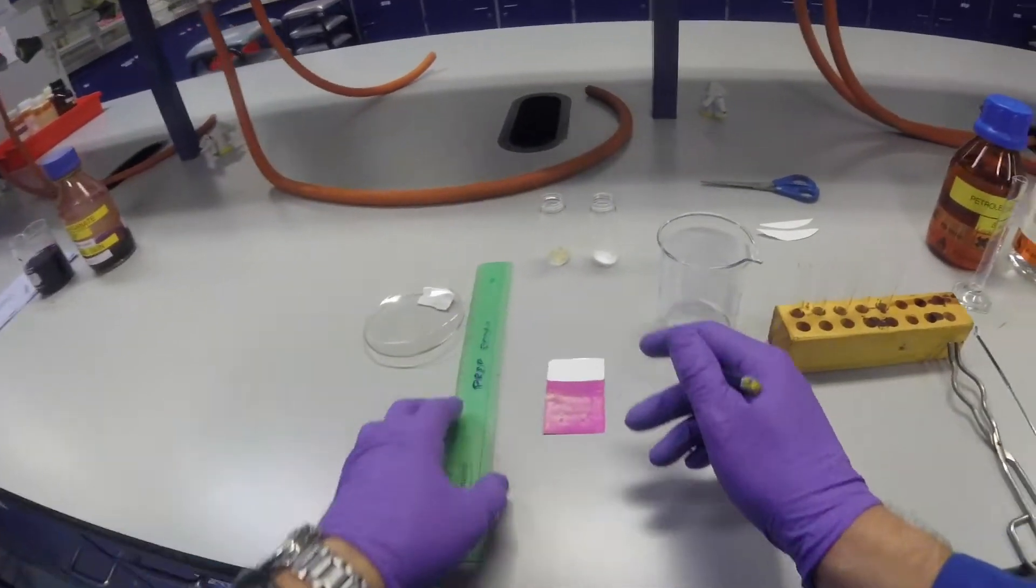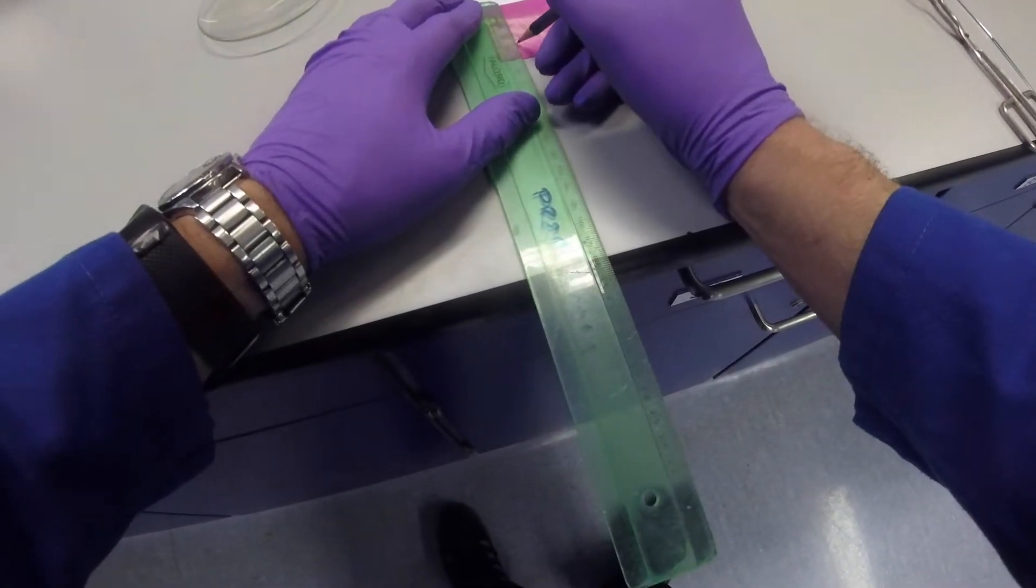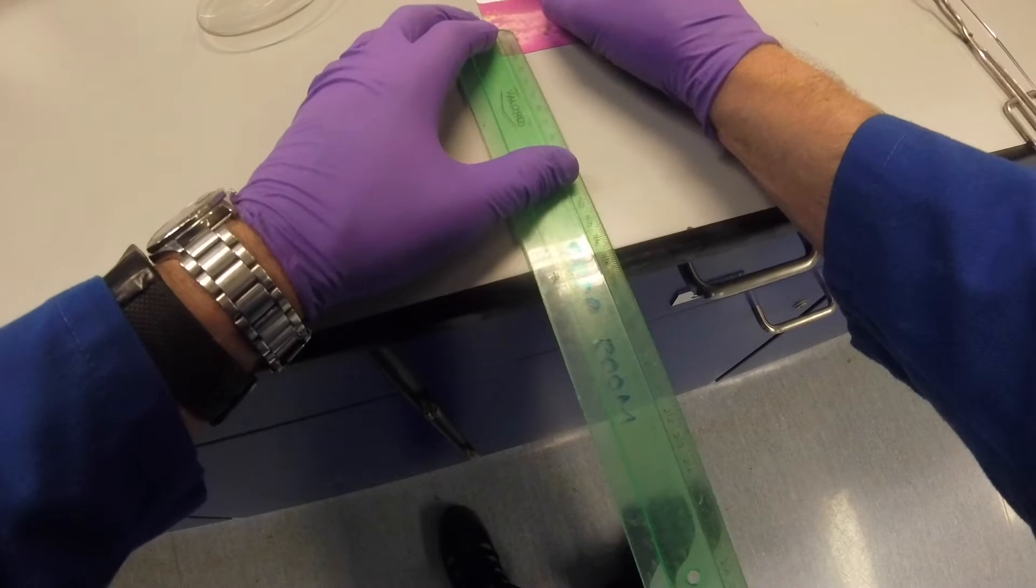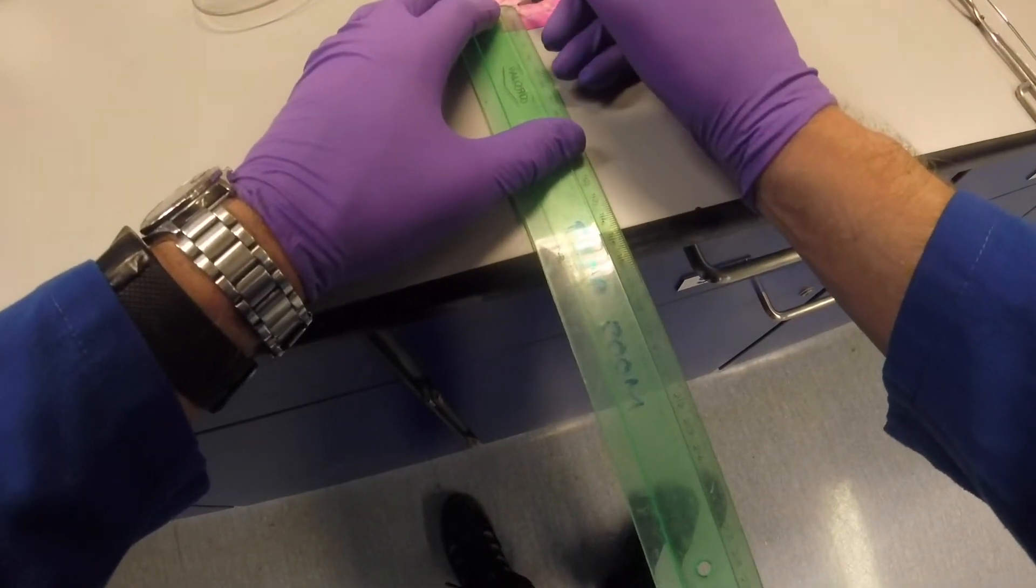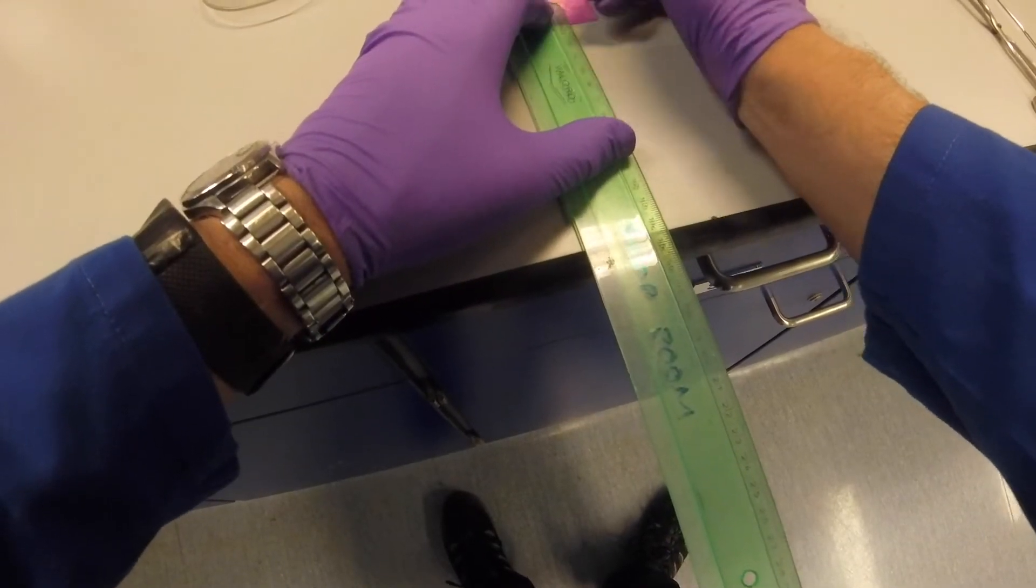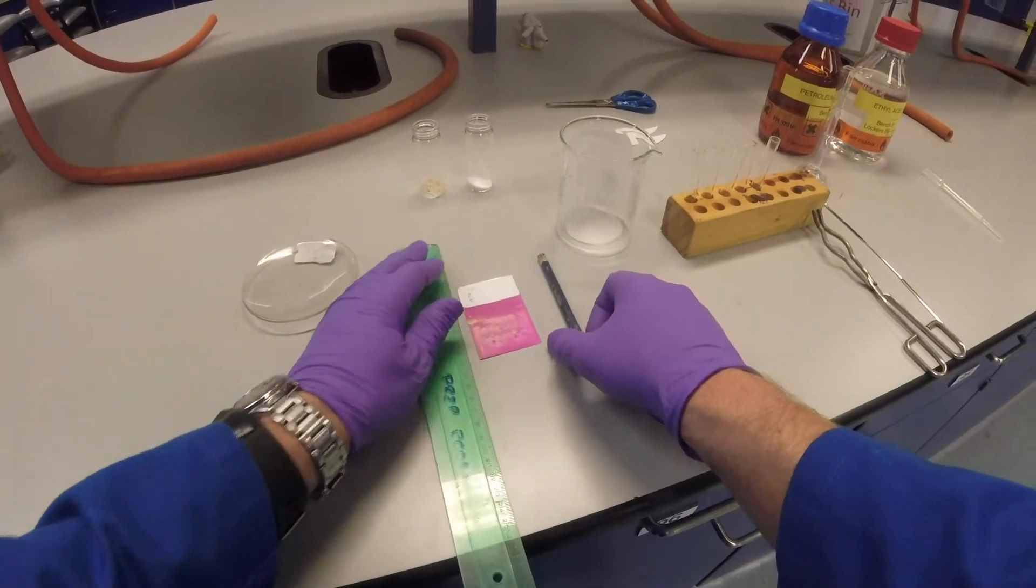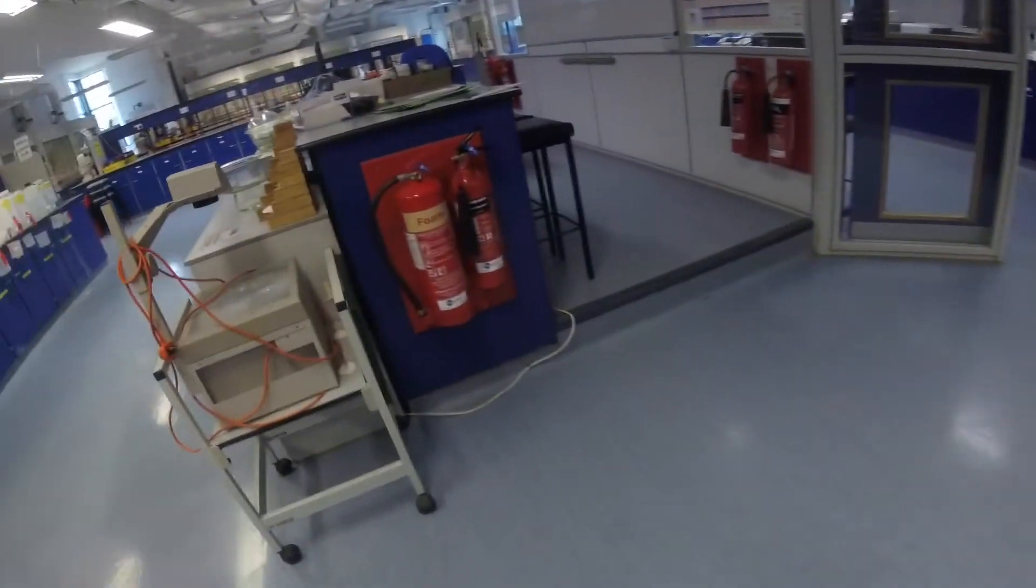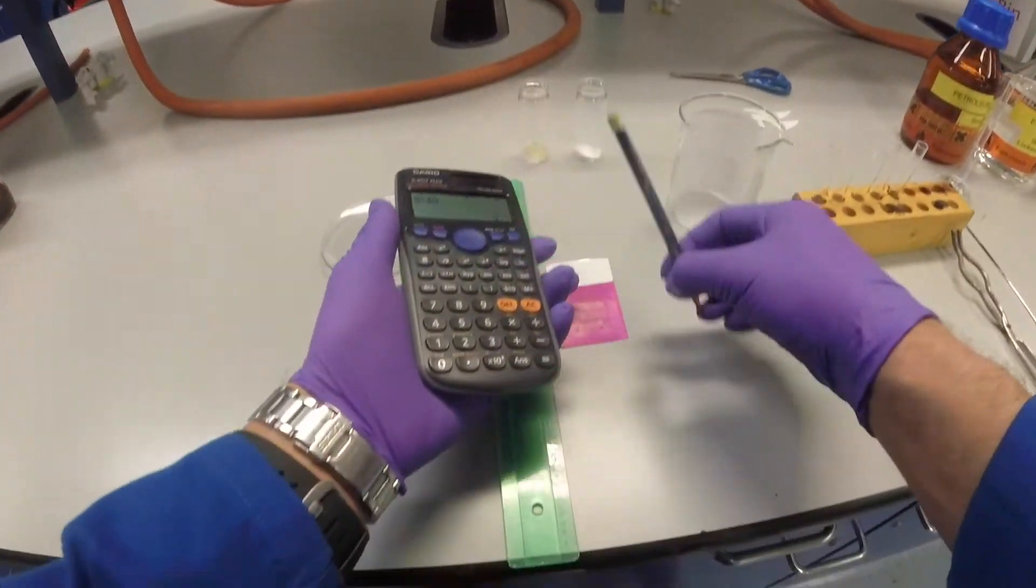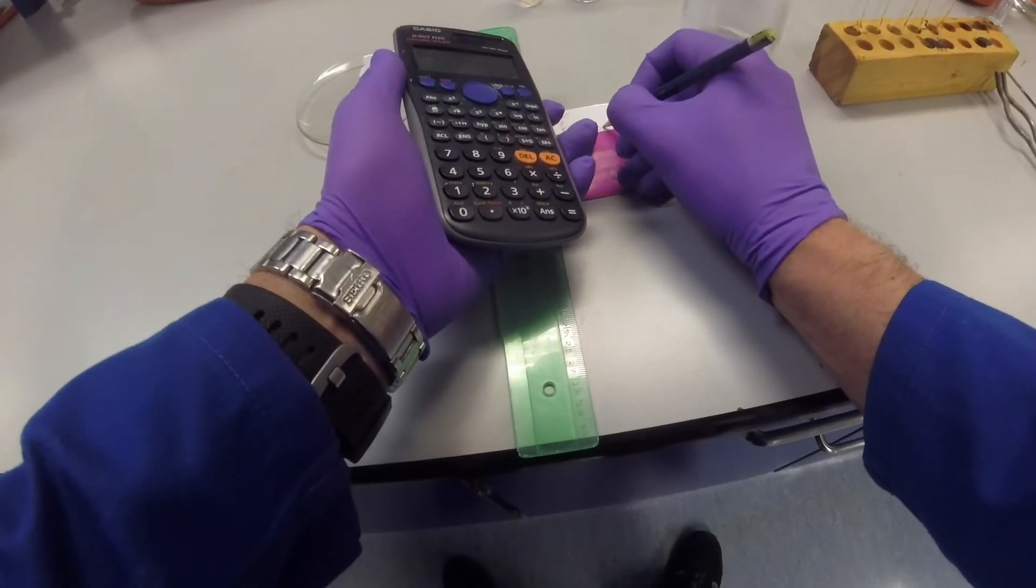That can be used as a record. The final thing we need to do is work out the retention factor or RF. To do that we measure the distance from the baseline to the solvent front, so in that case it's 40 millimeters. We then take the measurement from the center of the spot to the baseline, in this case 8 millimeters and in this case 5 millimeters. The retention factor for this one is 8 divided by 40, and the retention factor for this one is 5 divided by 40. You note that RF is a fraction of a whole. The retention factor for the first spot is 0.2, and the retention factor for this spot is 0.125.